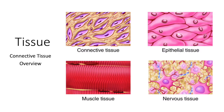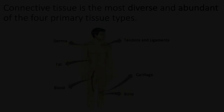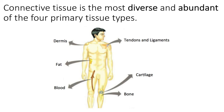Let's talk about connective tissue. Connective tissue is the most abundant and diverse of the four primary tissue types. You'll find connective tissue in your dermis, fat tissue, blood, bone, cartilage. The framework of many organs is made up of connective tissue. Lymph is actually connective tissue. So it's incredibly diverse, and because it's so diverse, the functions are very different within this category as well.